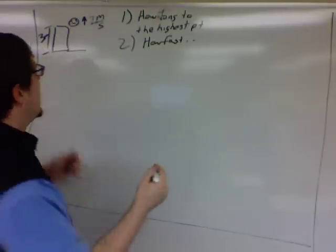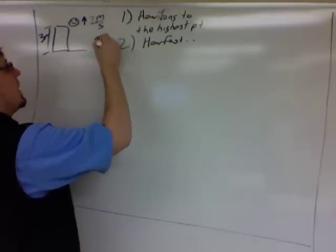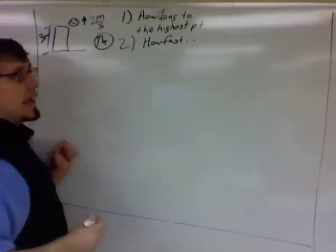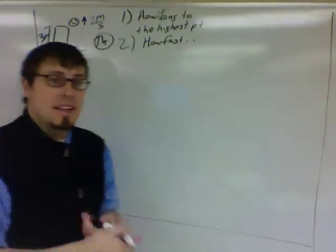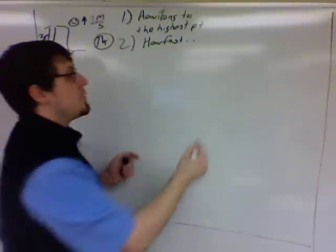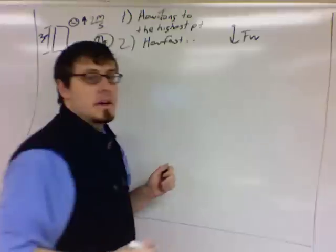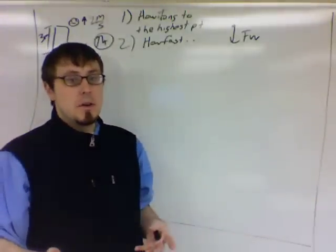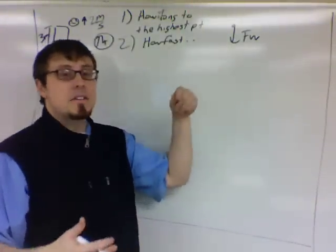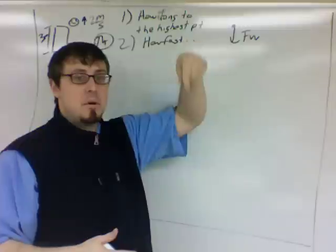So I'm going to write my five variables, and I'm going to pick a way to be positive. I'm going to call up positive. And the free body diagram, if we're neglecting air resistance, the free body diagram for this problem will simply be force of the weight straight down, which means our acceleration due to gravity, or our net acceleration, will be 9.8 down.